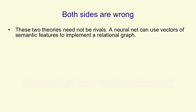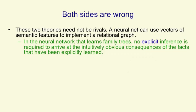A neural net can use vectors of semantic features to implement a relational graph. In the neural network that learns family trees, we can think of explicit inference as: I give you person one and a relationship, and you tell me person two. And to arrive at that conclusion, the neural net doesn't follow a whole bunch of rules of inference — it just passes information forwards through the net. As far as the neural net is concerned, the answer is intuitively obvious.